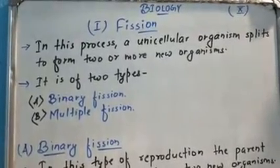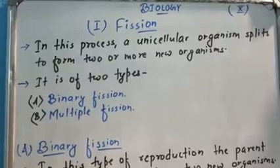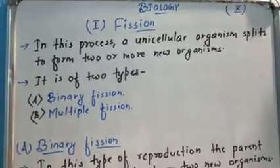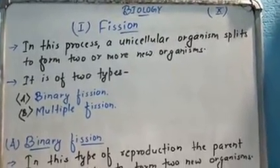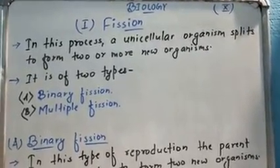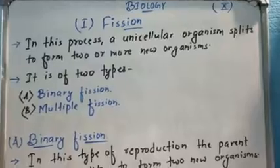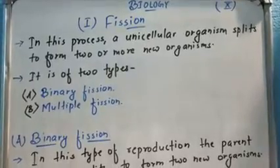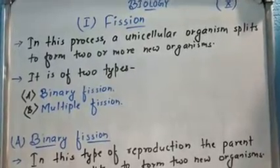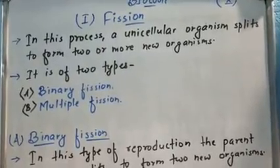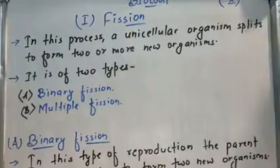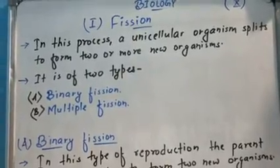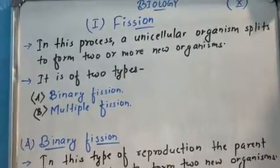So we are discussing asexual reproduction. In asexual reproduction, a single parent reproduces to form two or more than two individuals. This means dual parents are not required — reproduction happens from a single parent alone.